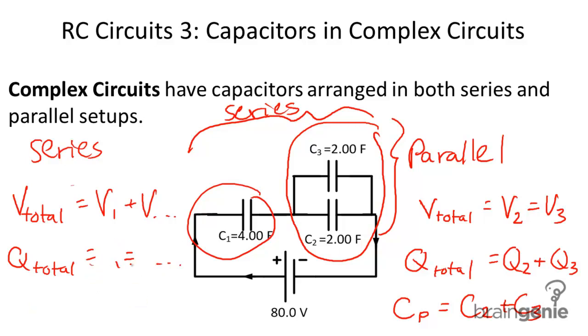And then finally, in terms of capacitance, I have the reciprocal sum rule. So the equivalent capacitance is going to be equal to the reciprocal sum of the various capacitors. And those are my rules.